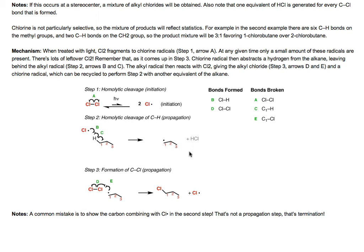Most students get this part. It's the second propagation step that students have a hard time with. We call this propagation because we have one free radical on the left-hand side and one free radical on the right-hand side — the number of free radicals is not changing, it's constant.